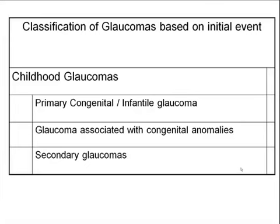Classifying glaucoma based on the initial event also includes childhood glaucomas: primary, congenital, or infantile glaucoma — again, the most common category. You can have glaucoma associated with congenital anomalies, and you can have secondary glaucomas, which could be due to pathology like Sturge-Weber syndrome or neurofibromatosis.